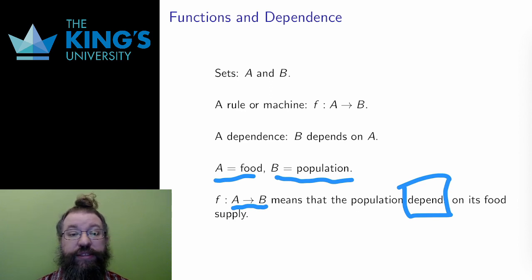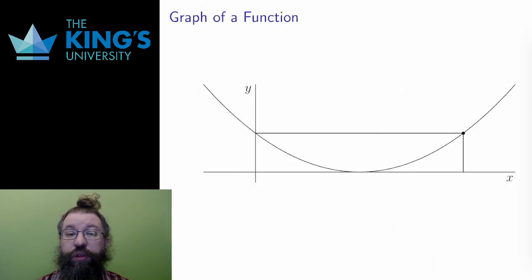There is a dependency between two quantities, the population and the food. A function describes that dependency. These are the three main ideas behind a function: a machine, a rule, and a dependency.